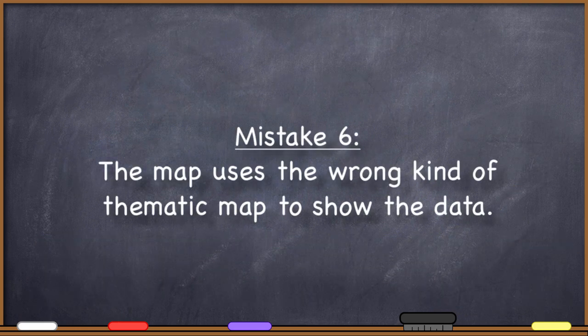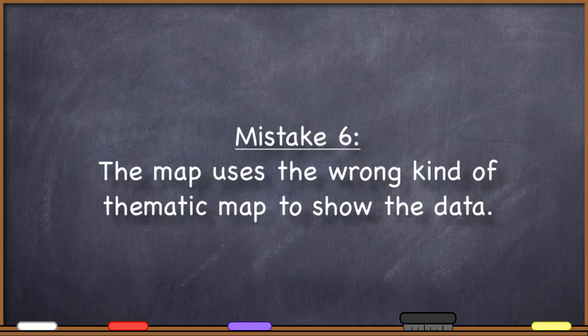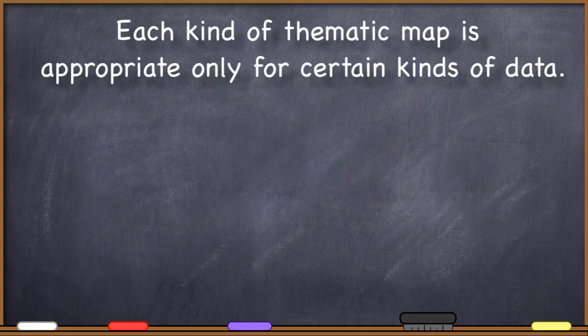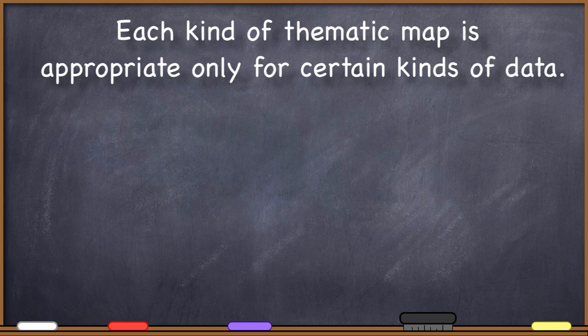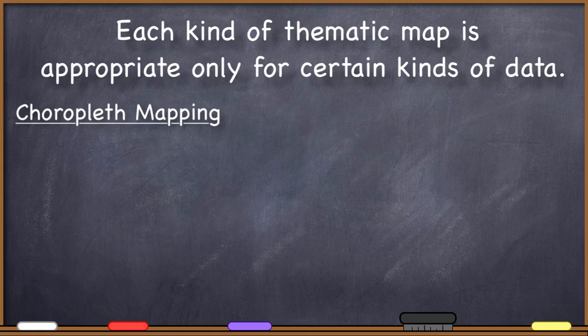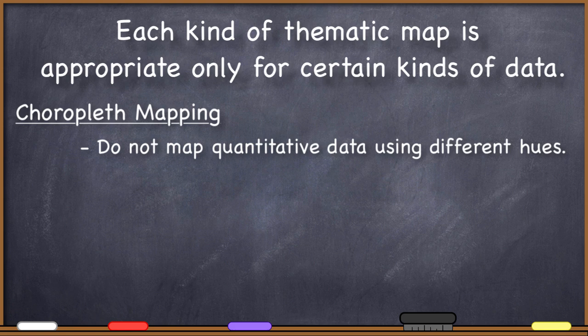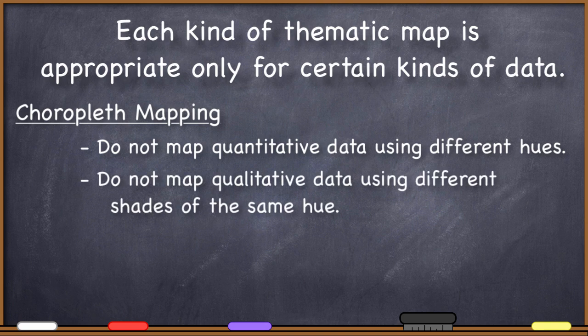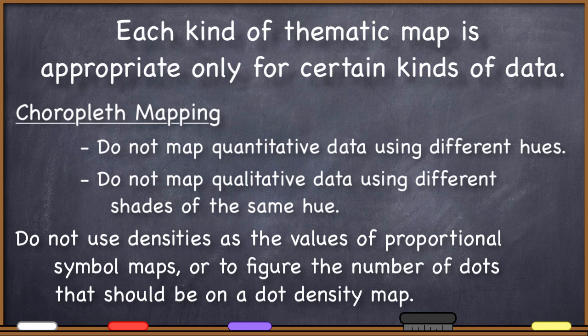Number six. The map uses the wrong kind of thematic map to show the data. Choropleth maps, dot density maps, proportional symbol maps, flow maps, and cartograms all have different kinds of data that they can show correctly. At least a rudimentary knowledge of each is necessary to ensure that the data you are trying to map is of an acceptable kind for the thematic mapping technique employed. The most egregious errors include mapping quantitative data on a choropleth map that uses different hues or colors instead of shades of the same color, mapping qualitative data on a choropleth map using shades of the same color rather than different hues, mapping densities with proportional symbol maps, or using densities to figure the total number of dots that should be on a dot density map rather than total values.